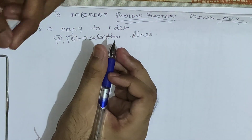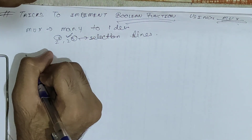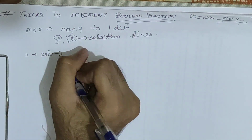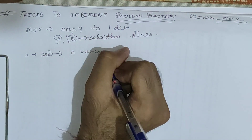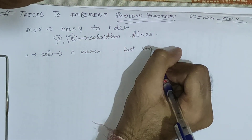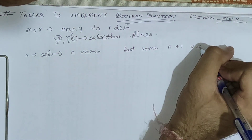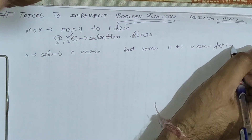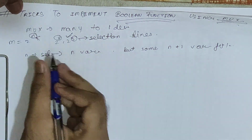With only n selection lines, we can implement all n-variable functions but only some (n+1)-variable functions. You can write m = 2 raised to n, where n is the number of selection lines.